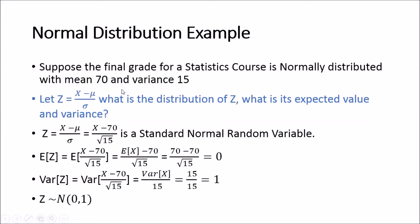Let's look at an example question. Suppose the final grade for a statistics course is normally distributed with mean 70 and variance 15. Let Z equal (X minus mu) over sigma. Then Z is distributed as standard normal. So Z is (X minus 70) over square root of 15, since sigma is the square root of the variance, which is square root of 15. The expected value of Z resolves to zero, and the variance of Z resolves to one, just as we showed.